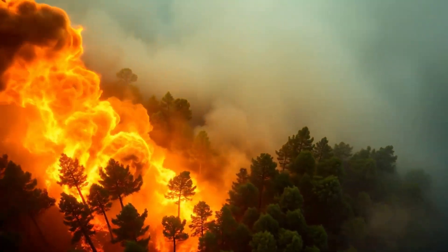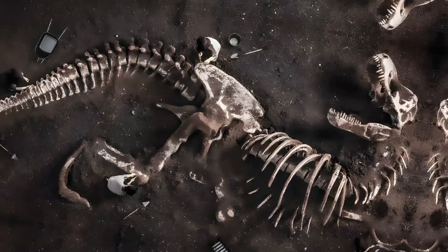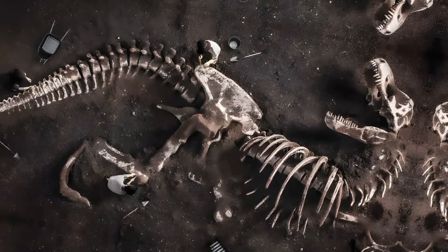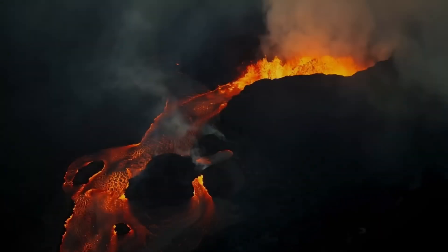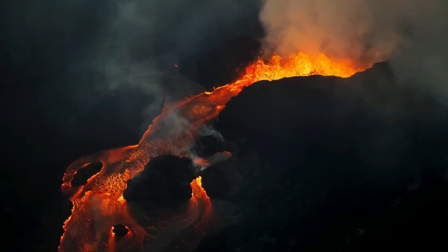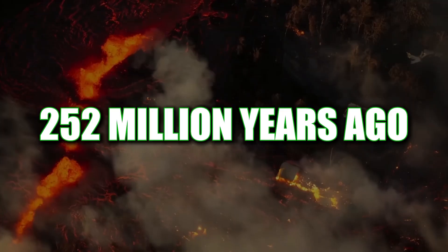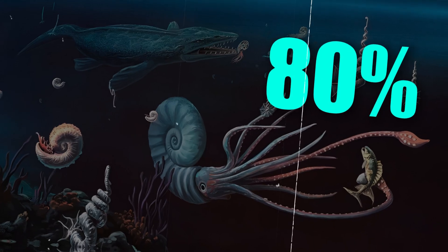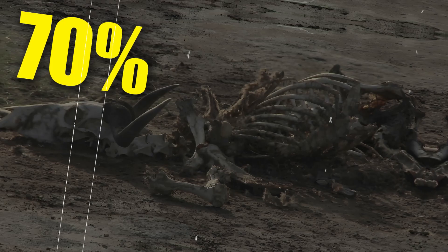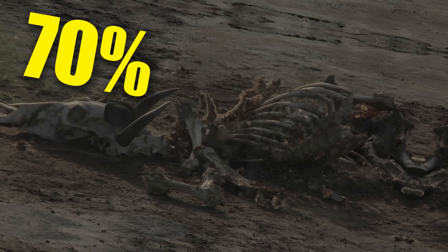Earth has seen five major mass extinctions, events where most living species were wiped out in a short period of time. The worst of these events was the Permian extinction, which was a volcanic eruption about 252 million years ago. It erased nearly everything, over 80% of marine life and around 70% of animals on land.